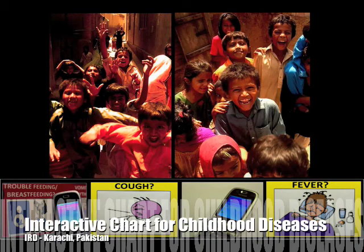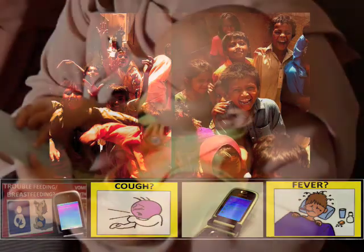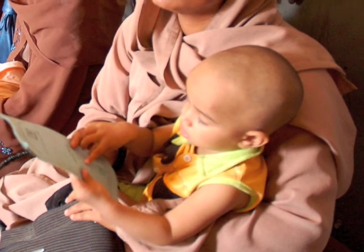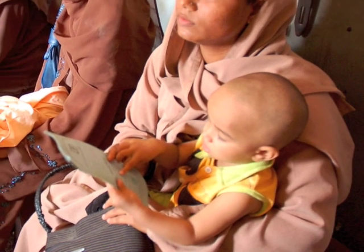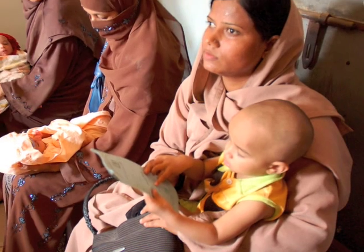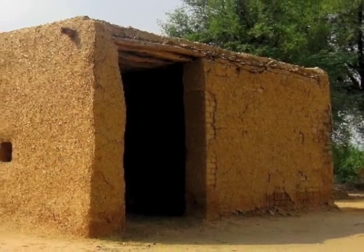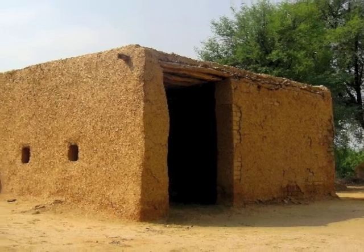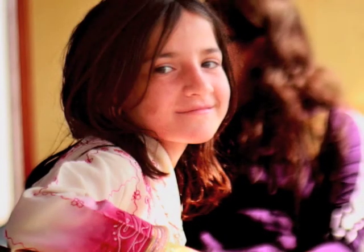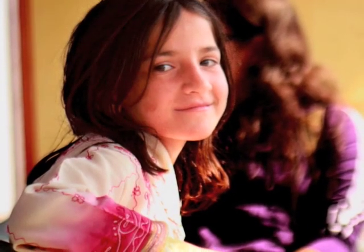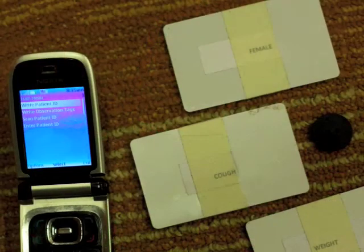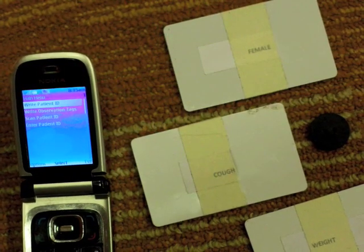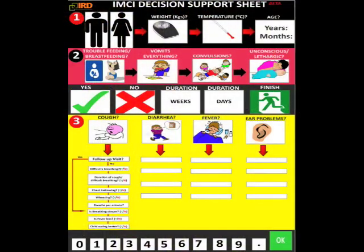The interactive chart for childhood diseases developed by IRD in Karachi, Pakistan is demonstrated in this video. Poor health care and poor diagnosis of childhood diseases is a problem in most of the developing world, particularly in rural areas due to the lack of trained personnel, resources and infrastructure. IRD in Pakistan has found a solution using RFID technology, a cell phone, and the World Health Organization's IMCI guidelines represented visually in a chart.